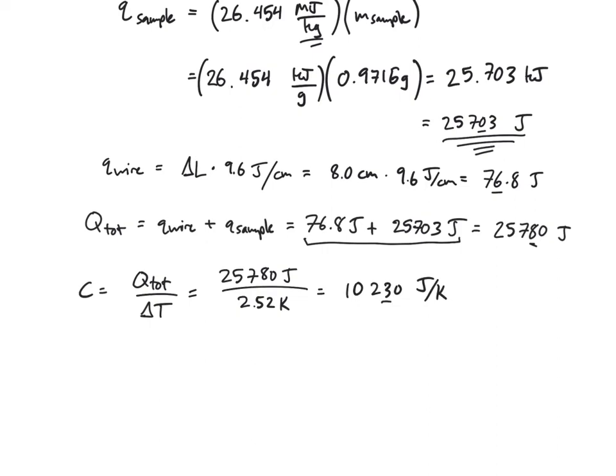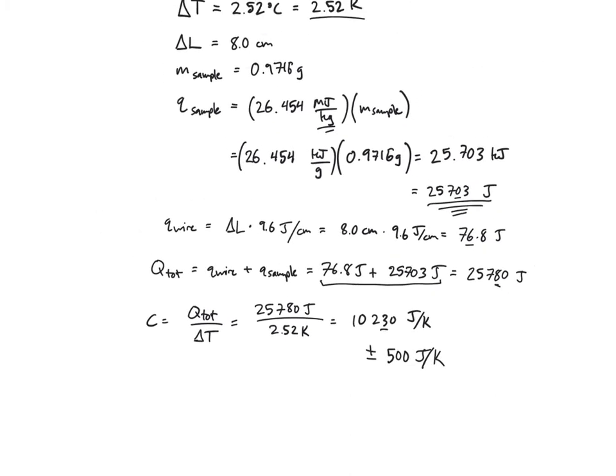So when you do your analysis, you should get a very similar heat capacity for your bomb calorimeter, maybe plus or minus 500 joules per Kelvin or so, something like that.